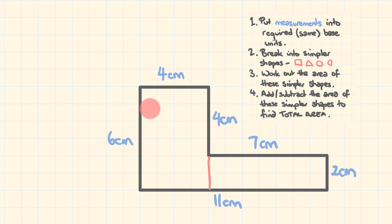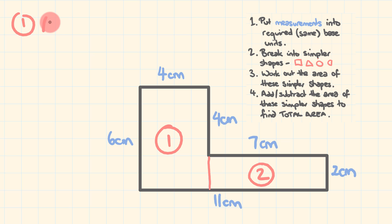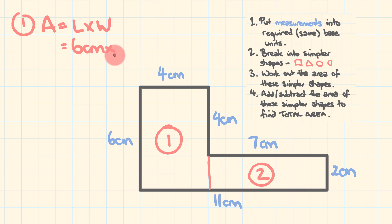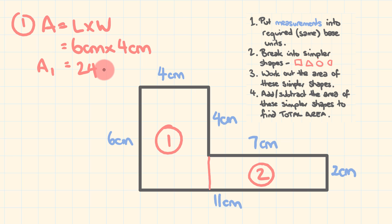Now let's work out the area of these two rectangles. For rectangle one, area equals length times width. The length of this rectangle is six centimeters, multiplied by the width of four centimeters. Six times four gives us area one, which is 24 centimeters squared — literally 24 of those little centimeter-squared units. You can go through and count them if you don't believe me.